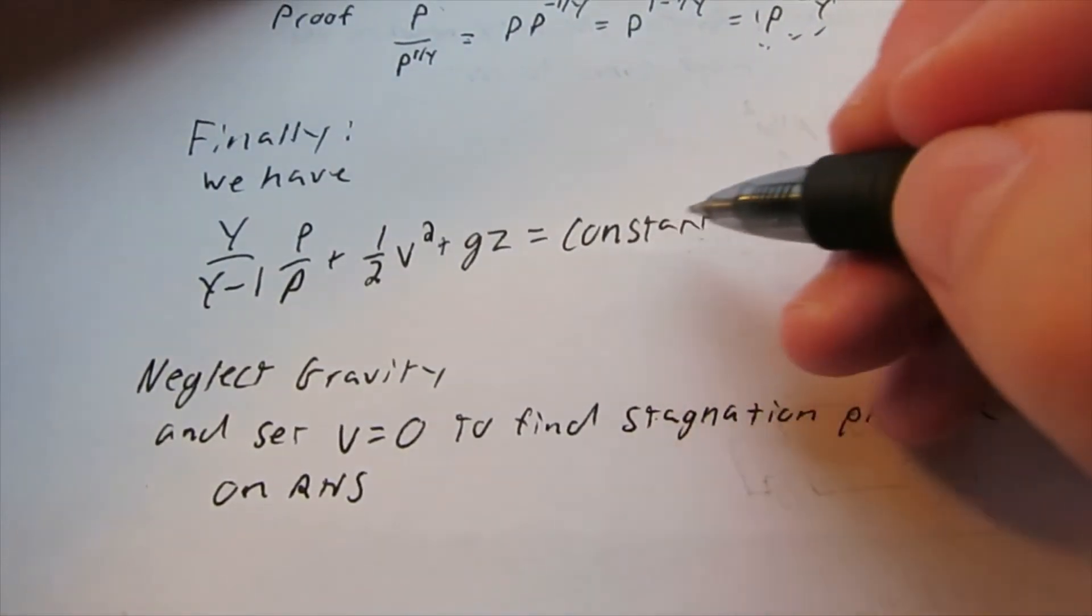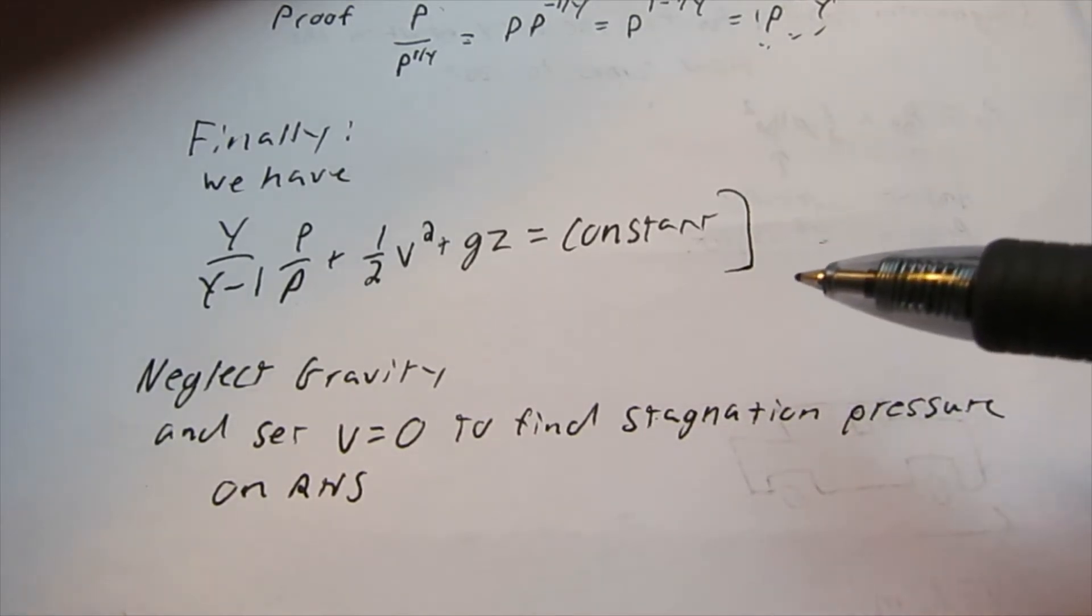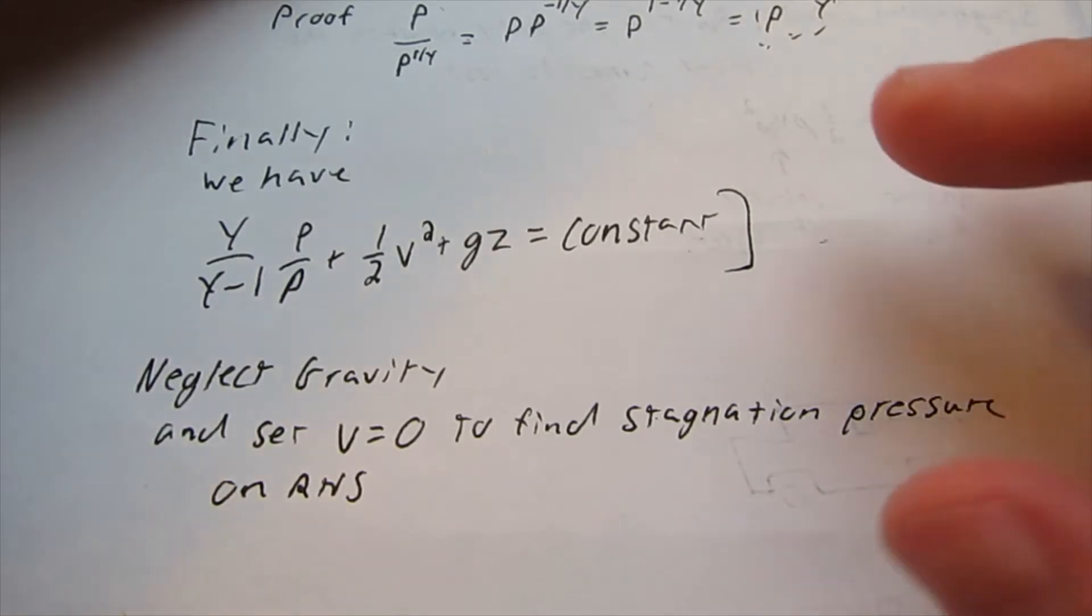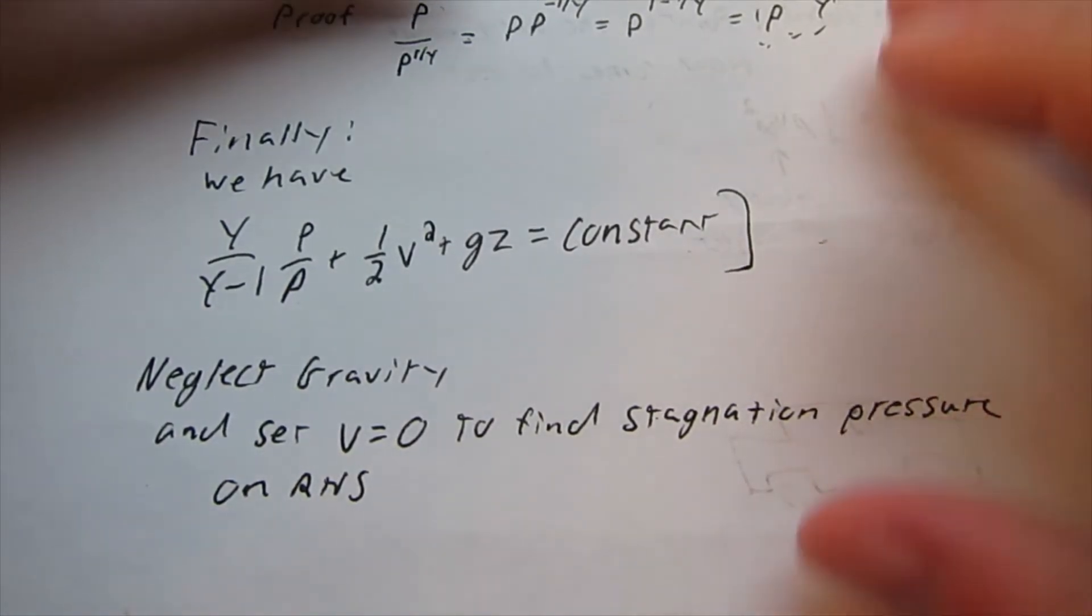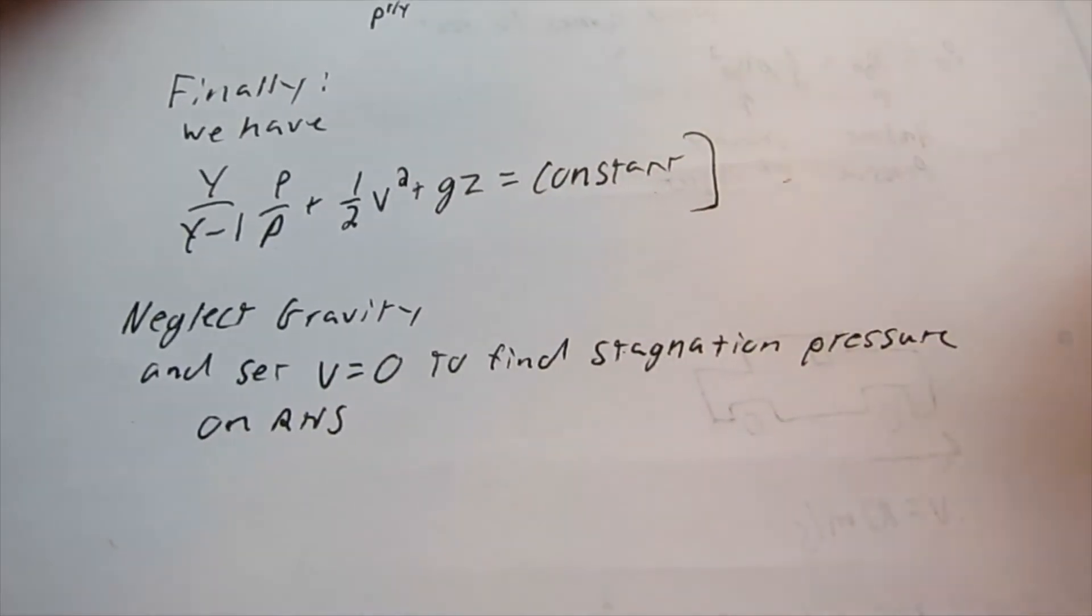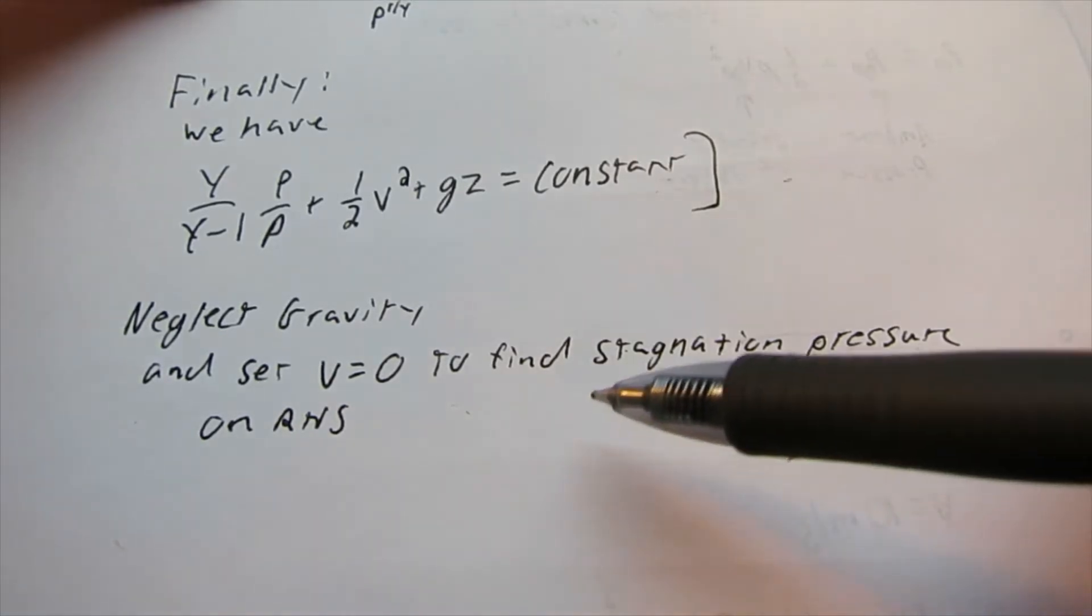So now, using this equation here, my goal is to find the relationship between velocity and stagnation pressure. So how do I go about doing that? First, we're going to neglect gravity, as pretty common in these problems, and set V equals to 0 to find stagnation pressure on the right-hand side.